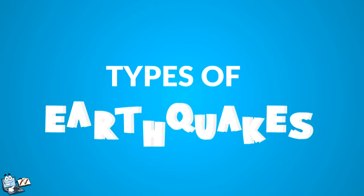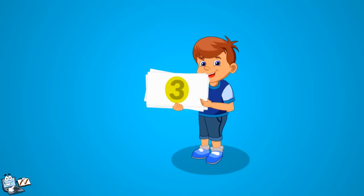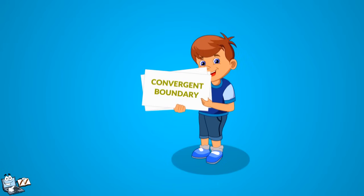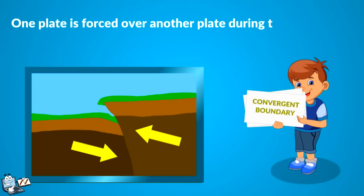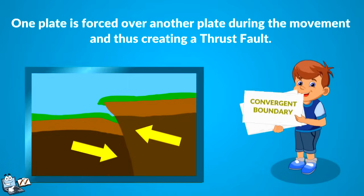Earthquakes can be classified in three main forms depending on the plate movements that occur under the Earth's surface. First one is convergent boundary. In this, one plate is forced over another plate during the movement and thus creating a thrust fault.